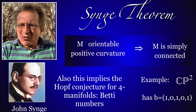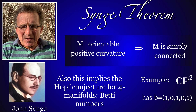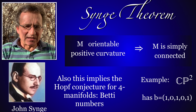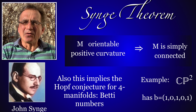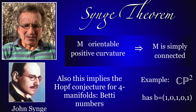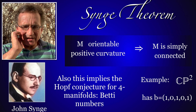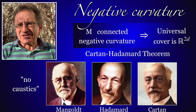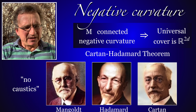What does one know about positive curvature manifolds? An important result: if the manifold is orientable, has positive curvature, and M is simply connected — this is Synge's theorem — it settles the Hopf conjecture in dimension four because then the Betti numbers B₁ and B₃ are zero, so by the Euler-Poincaré formula the characteristic is positive. In the case of negative curvature one knows that the universal cover has to be Euclidean space.